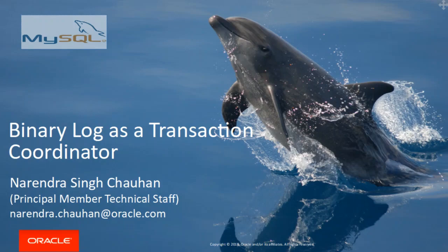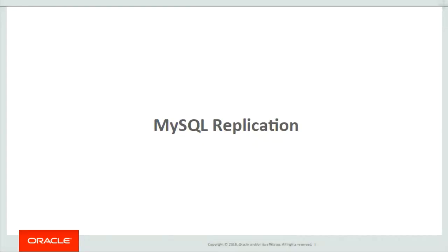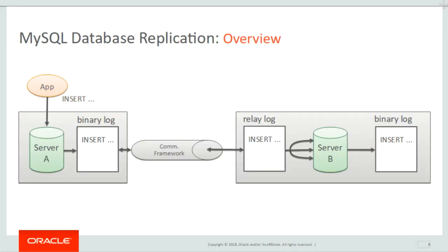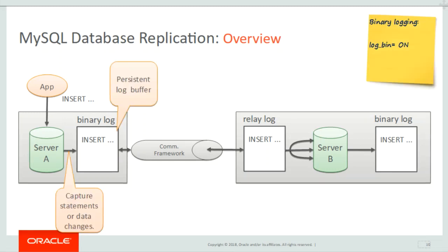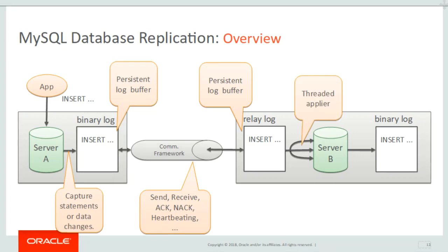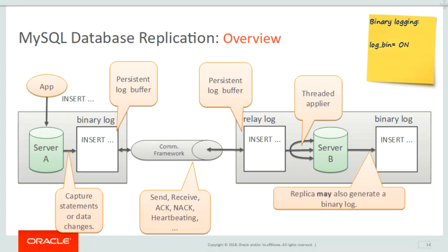Binary log as a transaction coordinator. In DBMS, database replication is a process of generating and reproducing multiple copies of data at one or more sites. In MySQL replication, when binary logging is enabled, a server captures the data changes into a persistent log buffer — that is, a binary log file. The master dumps the data through the network upon the replica's request. The replica receives the data and persists it in a relay log file, from where apply threads pick up the changes and execute them on the replica. Like the master, the replica may also generate a binary log.